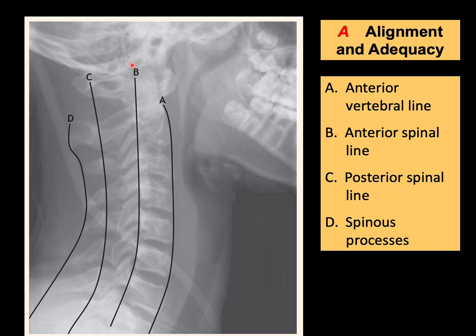For adequacy, you have to have a good look at the base of the skull and from C1 not only to C7 but you also need to see the upper border of T1. So: anterior vertebral line, anterior spinal line, posterior spinal line, and spinous process line — from the base of the skull to the upper border of T1.